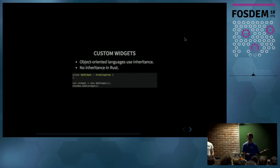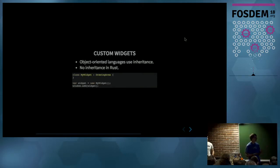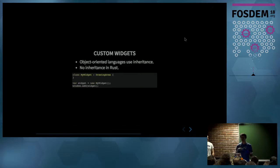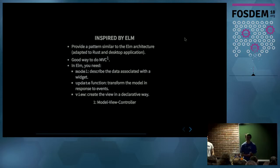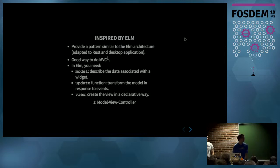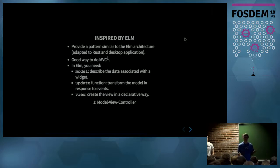Also, since Rust does not provide inheritance, you cannot — like in Vala — declare a new class deriving from an existing widget to use it like any other widget. That's not possible in Rust. So I wanted, with Relm, to be able to declare new widgets that could be used the same way as GTK widgets. Relm is inspired by a language called Elm, used for developing client-side applications — an alternative to JavaScript. I found it provides a good way to do model-view-controller.